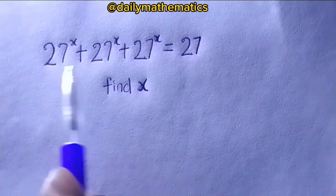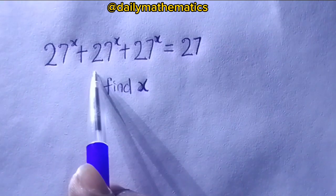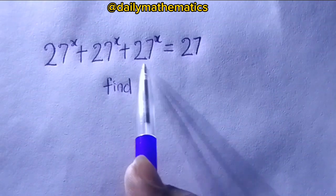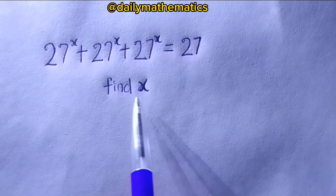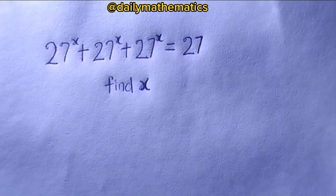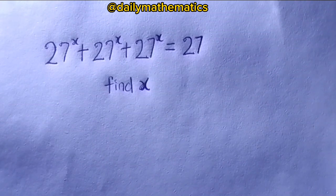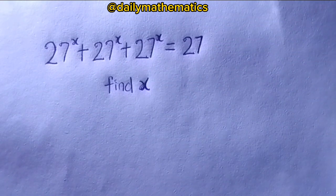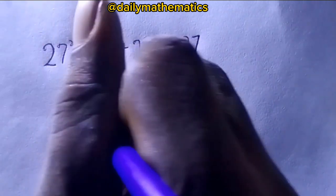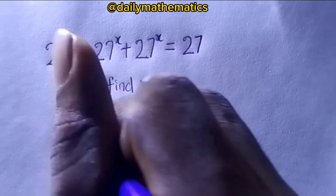27 raised to the power of x plus 27 raised to the power of x plus 27 raised to the power of x equals 27 — find x. Hi there, this is Daily Mathematics. Today we want to solve this nice question. It's straightforward and easy, but it has multiple ways of solving it. In this video, I'm going to work out two methods.